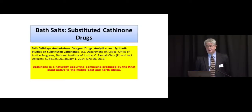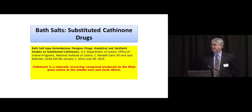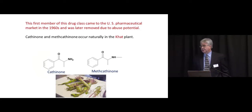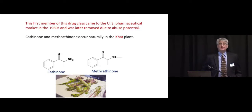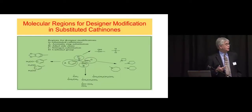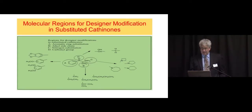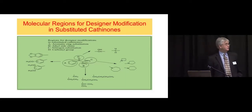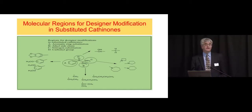One of our projects over the years has to do with the so-called bath salts — cathinone molecules. Bath salts was simply the name on the container when Customs started dealing with these things. Cathinone is a naturally occurring product produced by the khat plant in the Middle East. If you watched the movie Captain Phillips, you saw the Somali pirates chewing the leaves of this plant. The first member of this category came to the US market in the 1960s and was removed due to its abuse potential. Now it and many of its regioisomers are back for the same reason. All the molecular manipulations that can occur from such a molecule are listed, many having overlapping analytical signatures requiring unique analytical methods for differentiation.